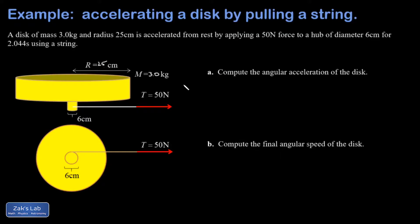In this problem, we're accelerating a disk by wrapping a string around the hub and pulling on it with a known force. We maintain the tension at 50 Newtons the entire time. We have specs on the disk - it has a mass of 3 kilograms and a radius of 25 centimeters, and that will allow us to calculate its moment of inertia.